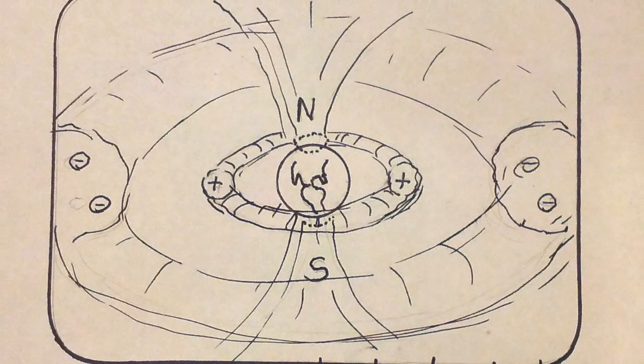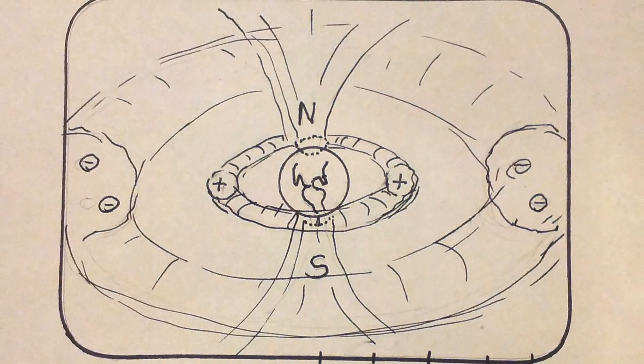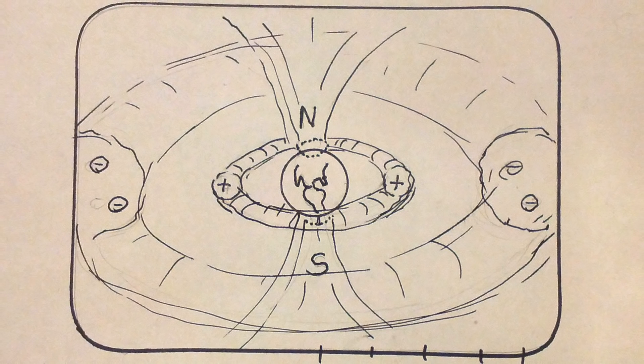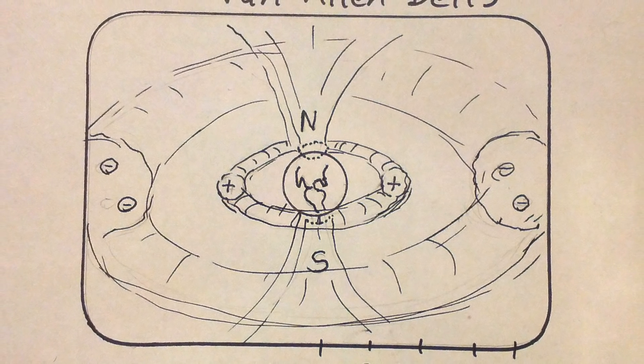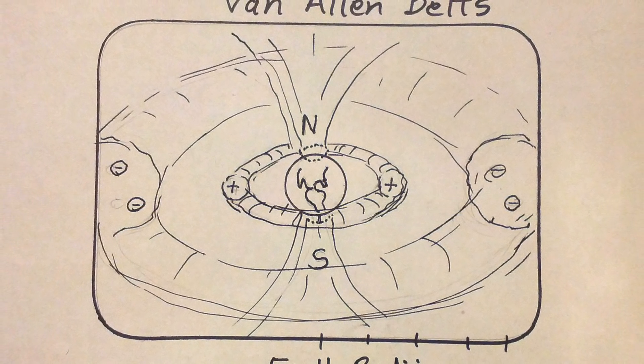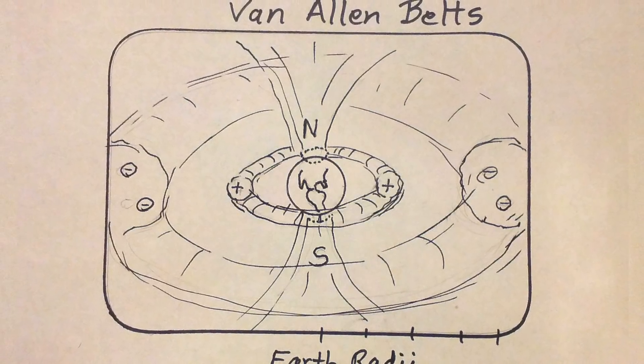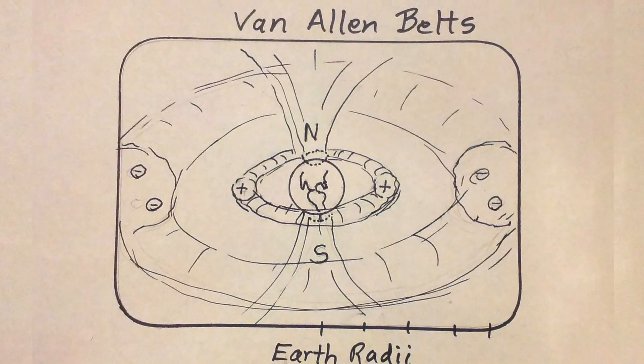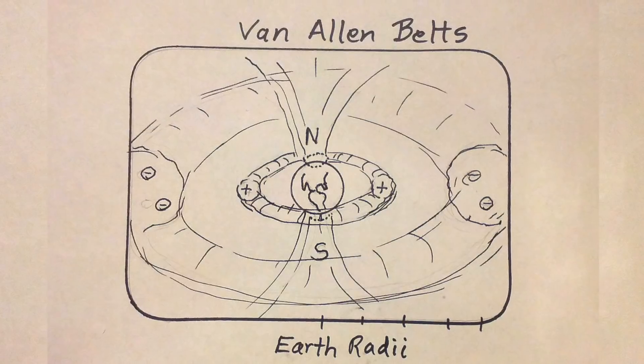Let us zoom out a little more and see what larger environment these sprites and jets are communicating with. Pulling further out, we see the earth and all its lightning and its sprites and its jets are just a very small part of a much larger electrical system. Here I've drawn two rings around the earth. They are called the Van Allen belts.